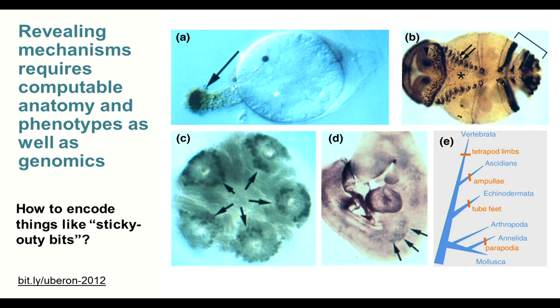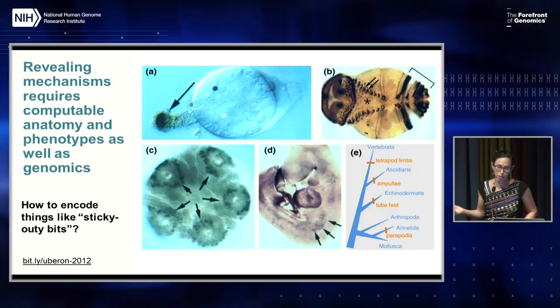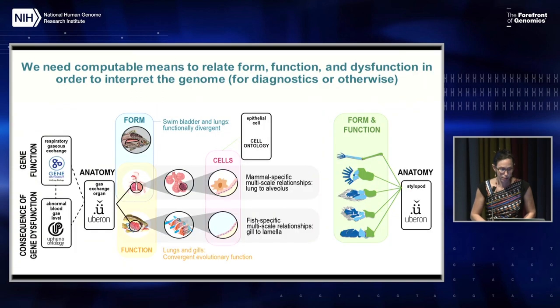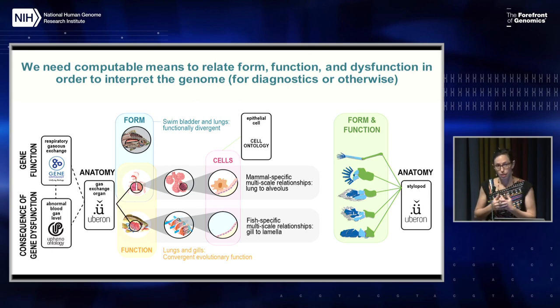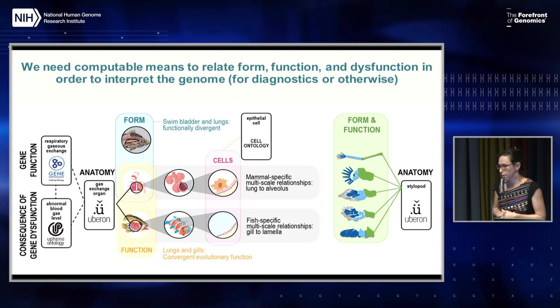If you look across the phylogeny, we have a similar function in tetrapod limbs, ascidian ampullae, echinoderm tube feet, and annelids in their peripodia. How do we reveal these mechanisms and understand how those mechanisms are dysfunctional and thereby causal of disease? The answer is we need ontologies — computable ways of representing form, function, and dysfunction in order to interpret the genome. We can have the most wonderful genome assemblies in the world, but if we don't have a good way of representing anatomical, expression, and phenotypic variation, we can't readily interpret the function of those differences throughout evolution, crop breeding, and disease.